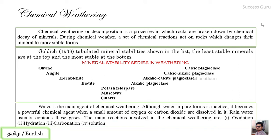Water is the main agent of chemical weathering. Water in its pure form is a solution. When combined with oxygen and carbon dioxide from the atmosphere, it becomes highly reactive. Free oxygen and carbon dioxide in the atmosphere make water very reactive. The chemical reactions involved are: oxidation, hydration, carbonation, and solution.